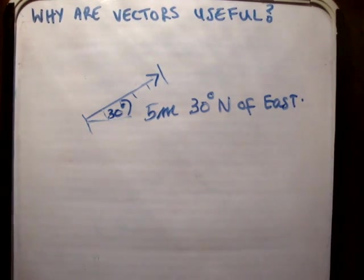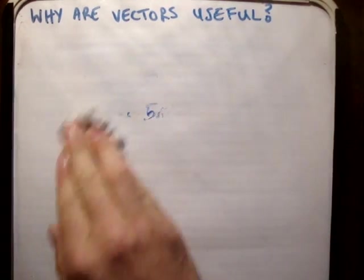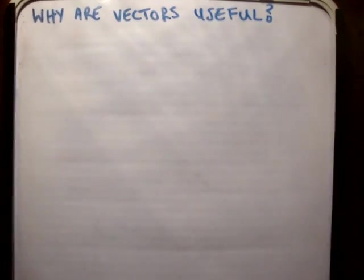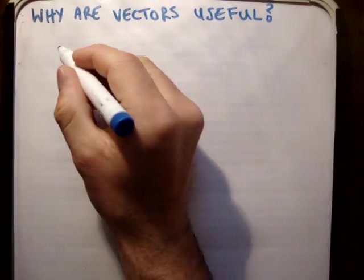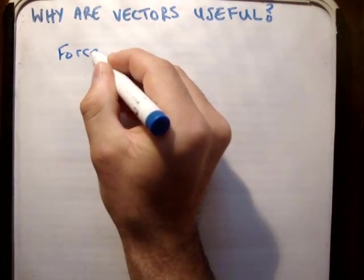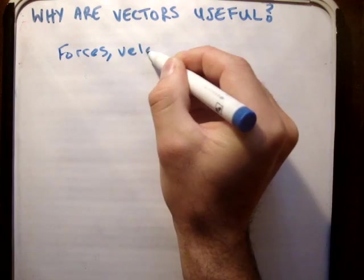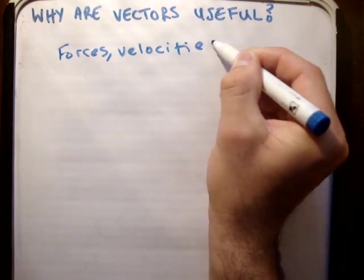That's a quick recap of what vectors are. Now why are they useful? Vectors can represent lots of things - for example, forces, velocities, and so on.